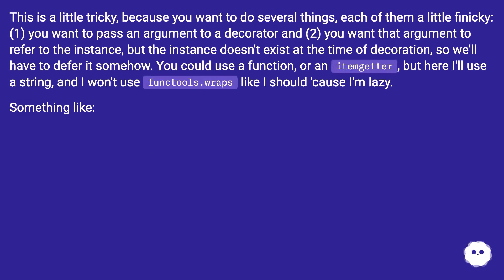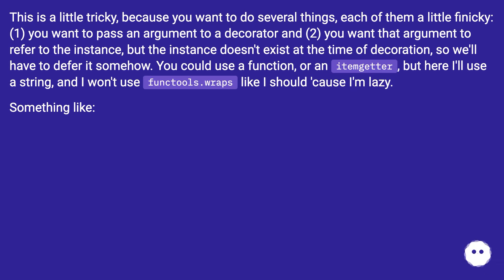One, you want to pass an argument to a decorator, and two, you want that argument to refer to the instance. But the instance doesn't exist at the time of decoration, so we'll have to defer it somehow.